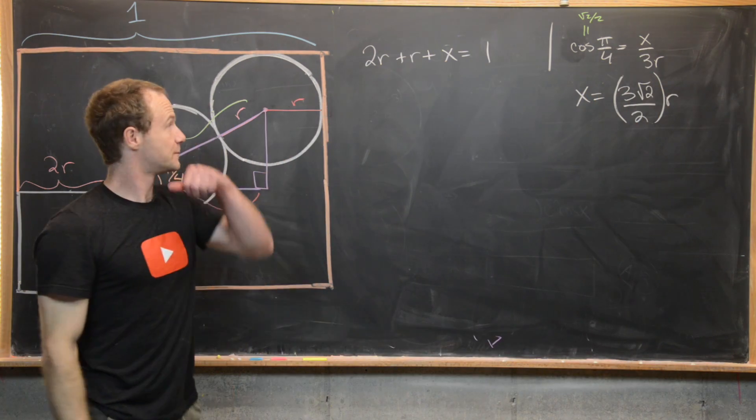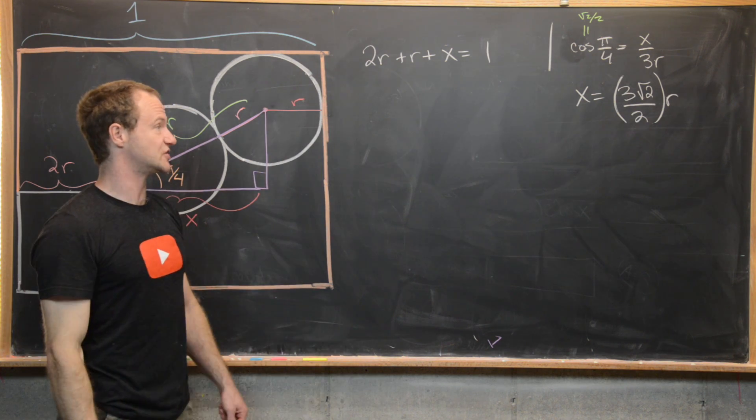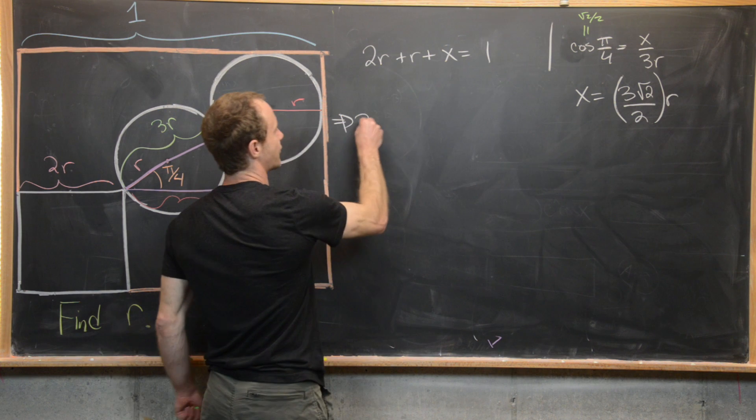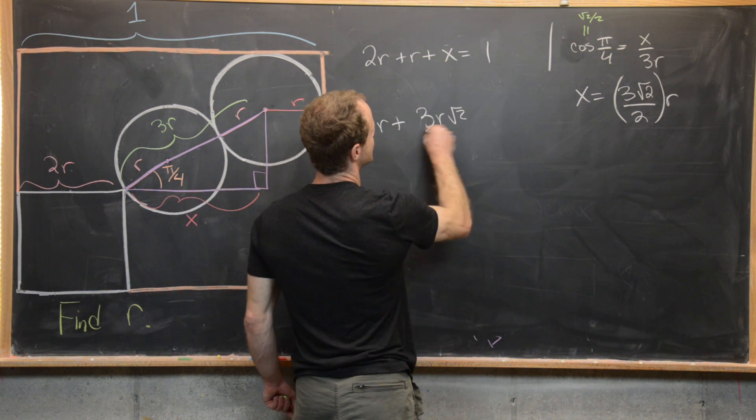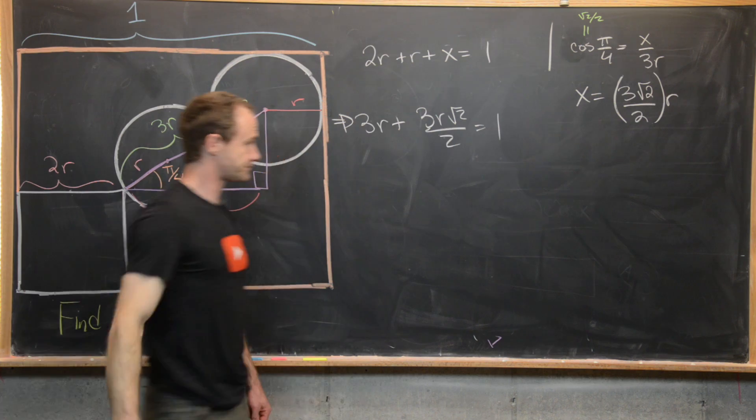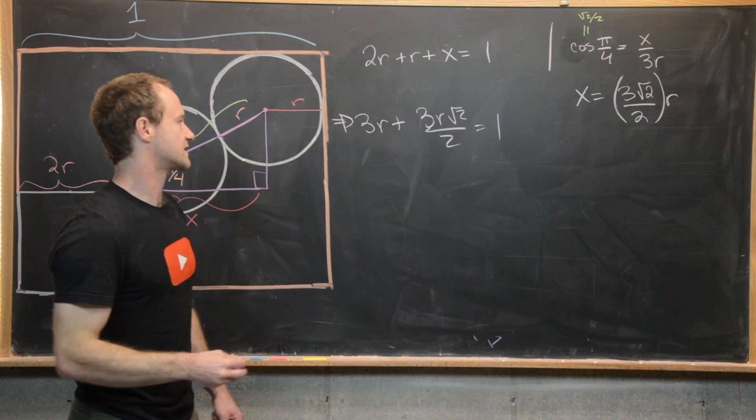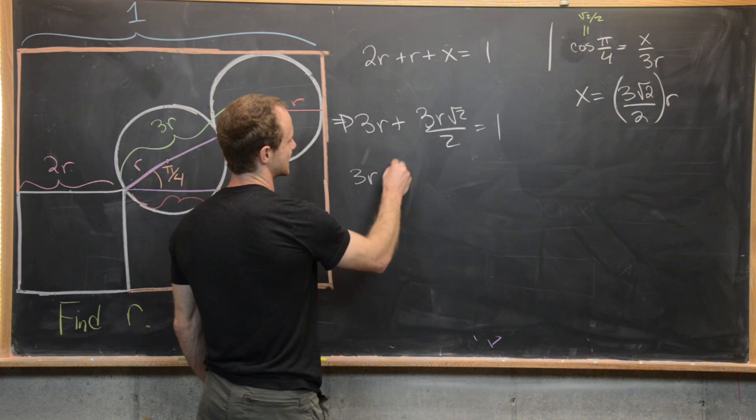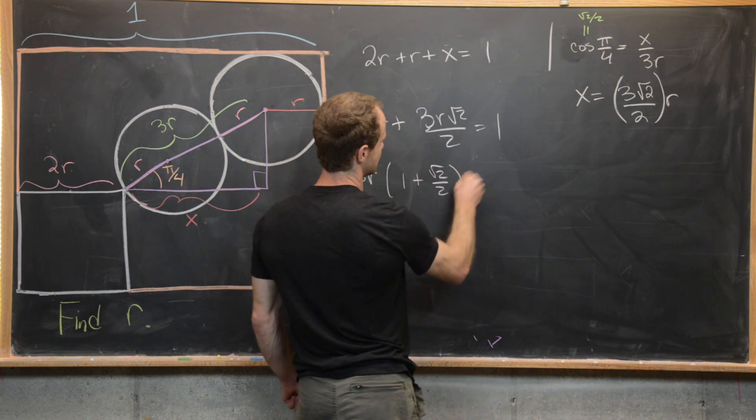So we've got that. Great. Now we can plug that into this equation. We've got a linear equation that we can solve for r. So notice we're going to have 3r plus 3r√2 over 2 equals 1. Let's maybe factor out a greatest common factor and let's see what we get. We can factor a 3r out of this. And that's going to give us 1 plus the square root of 2 over 2 equals 1.